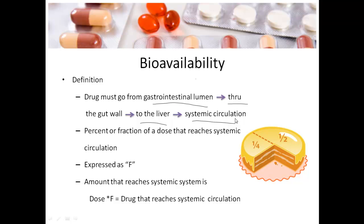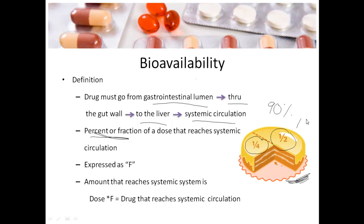The exact definition of bioavailability is the percent — or fraction, whichever you prefer — of a dose that reaches systemic circulation. If you look at this cake, a whole cake was made, but the part that reaches systemic circulation could be just a fourth of it, or maybe half, or as high as 90%, or as low as 1%. Bioavailability can really change drastically based on the drug and the situation in the patient's body.